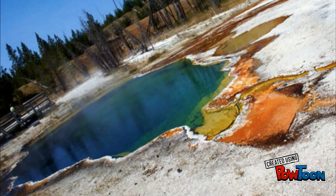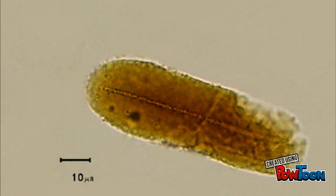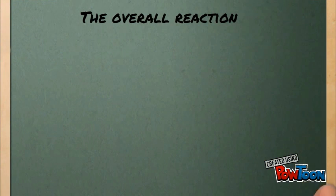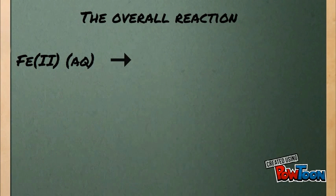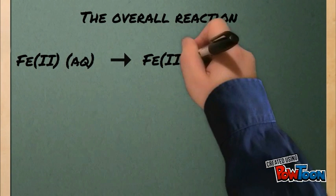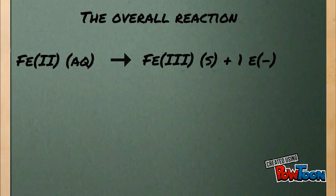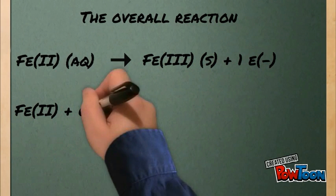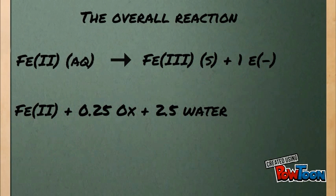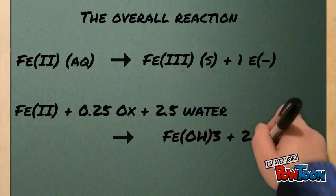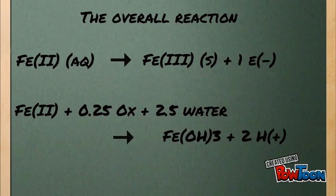Moreover, there are various forms of life that depend on iron as a sole energy source. An example of these forms of life can be found on the bottom of this well. In order to create the free energy required, the microorganism takes up ferrous iron and oxidizes it to ferric iron. Since most microorganisms survive in environments with neutral pH, the reaction actually looks like this.